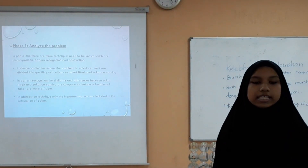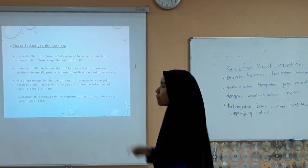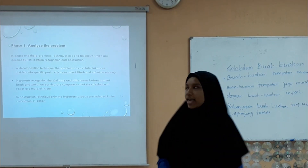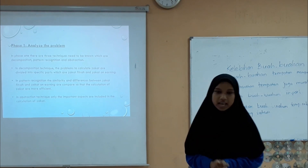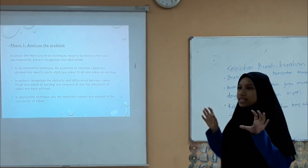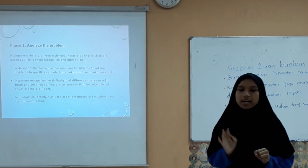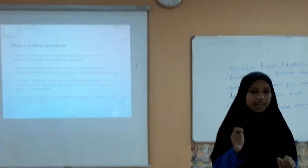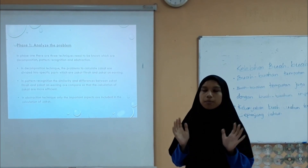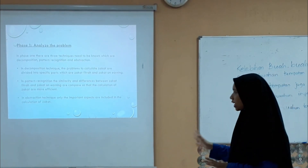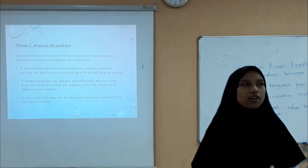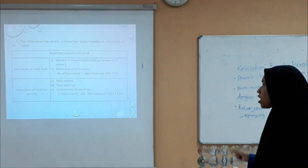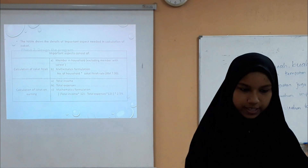There are five phases in this project. Phase 1: analyze the problem. In phase 1, there are three techniques: decomposition, pattern recognition, and abstraction. In decomposition, the problems to calculate zakat are divided into specific parts — zakat fitrah and zakat on earning. In pattern recognition, the similarities and differences between the two are compared for more efficient calculation. In abstraction, only the important aspects are included. The table shows the details of the zakat aspects needed in the calculation.